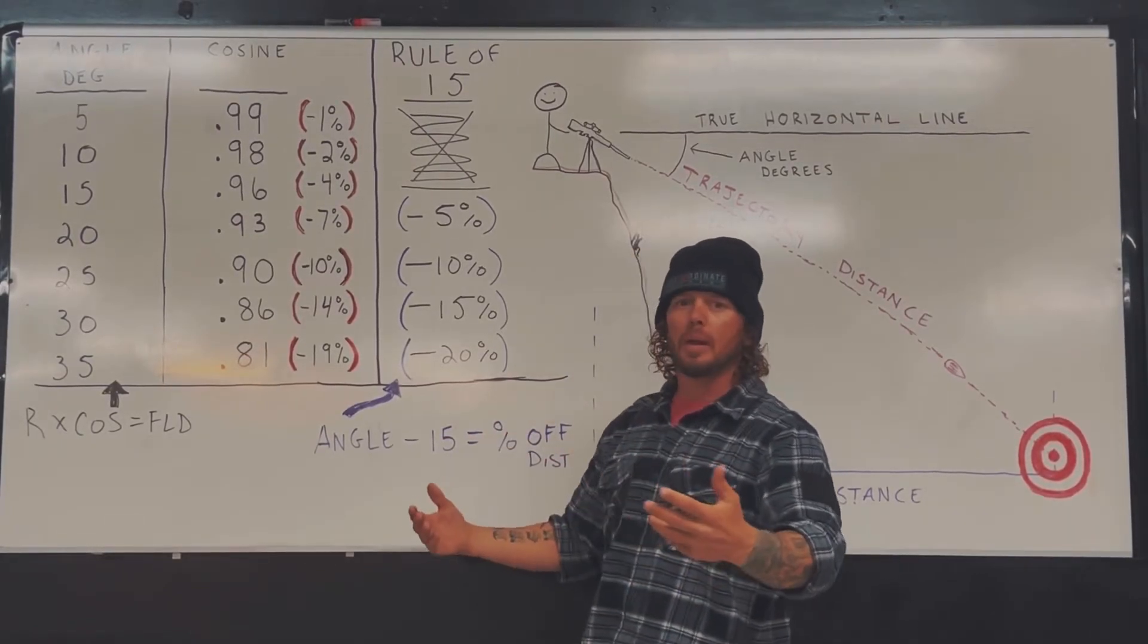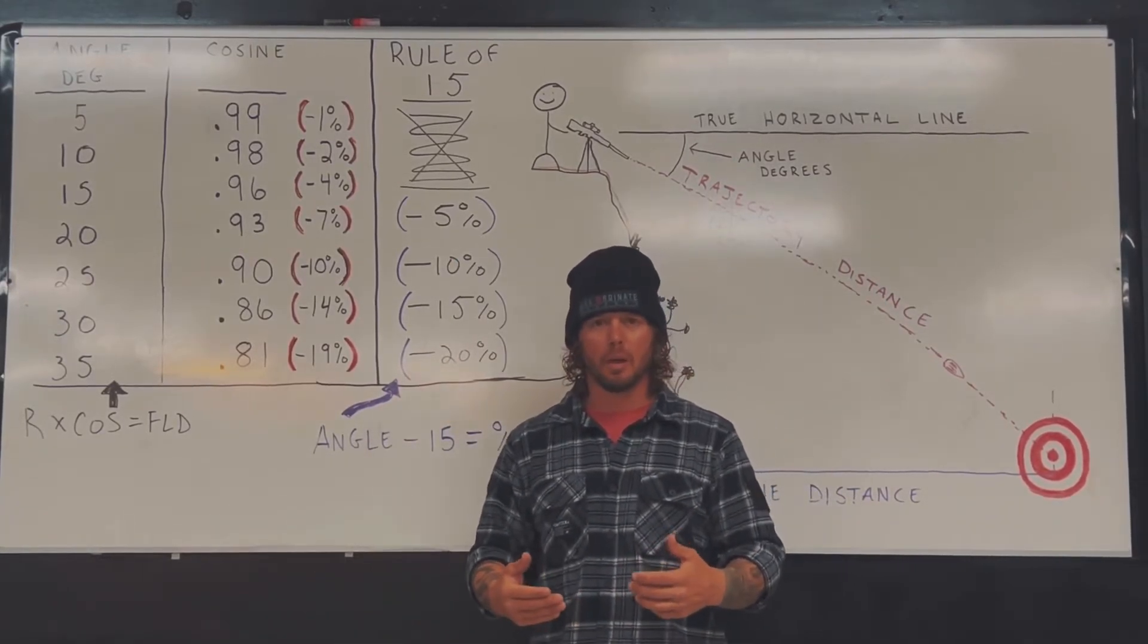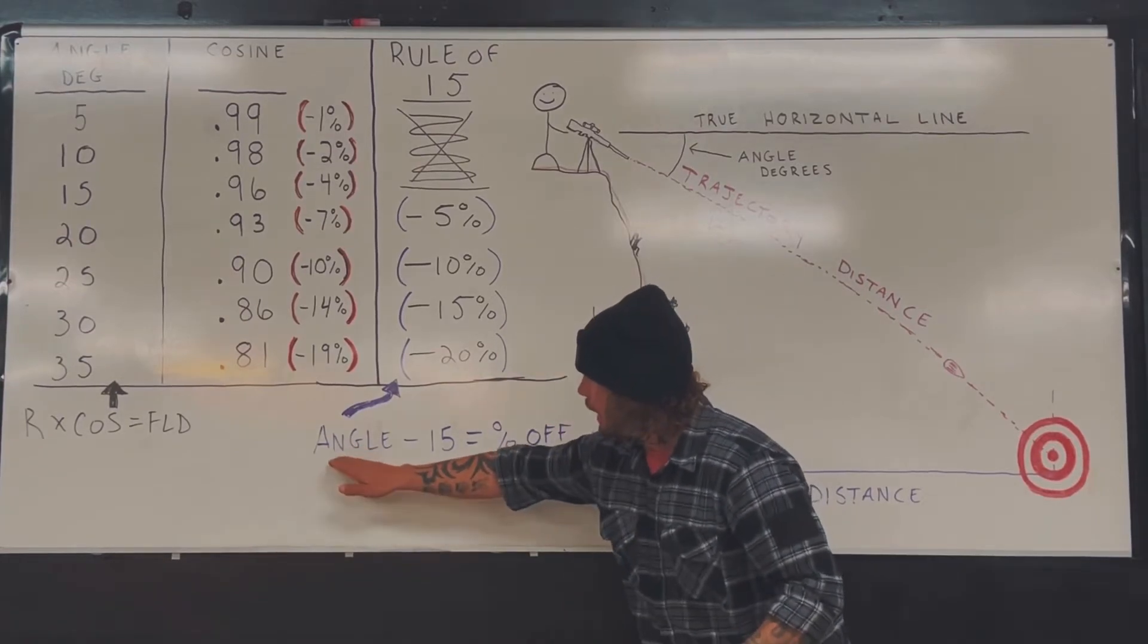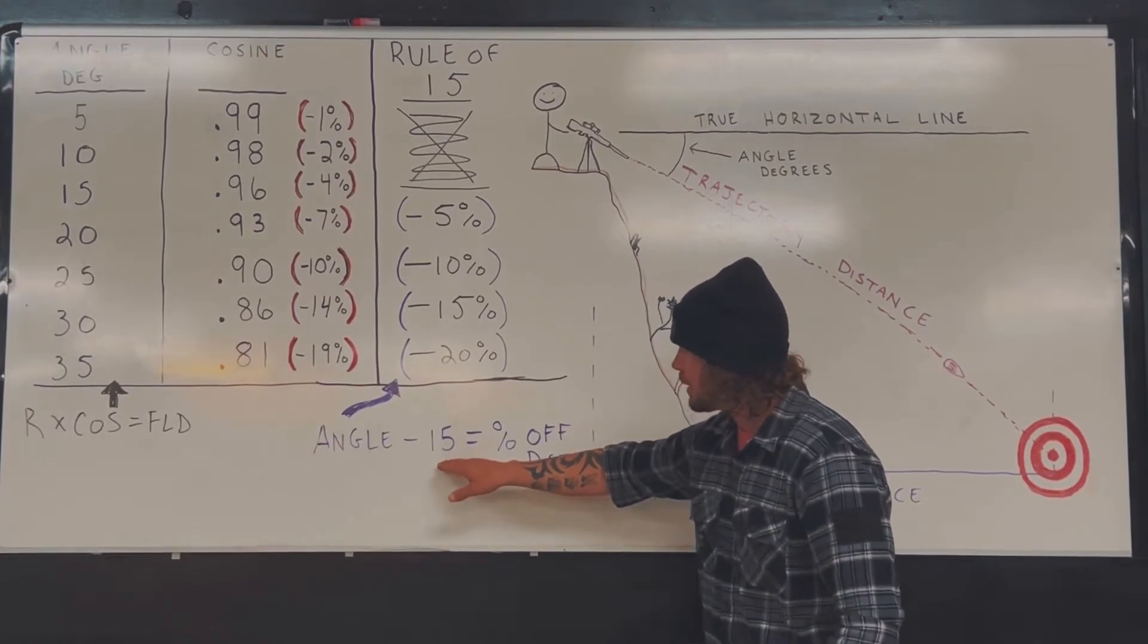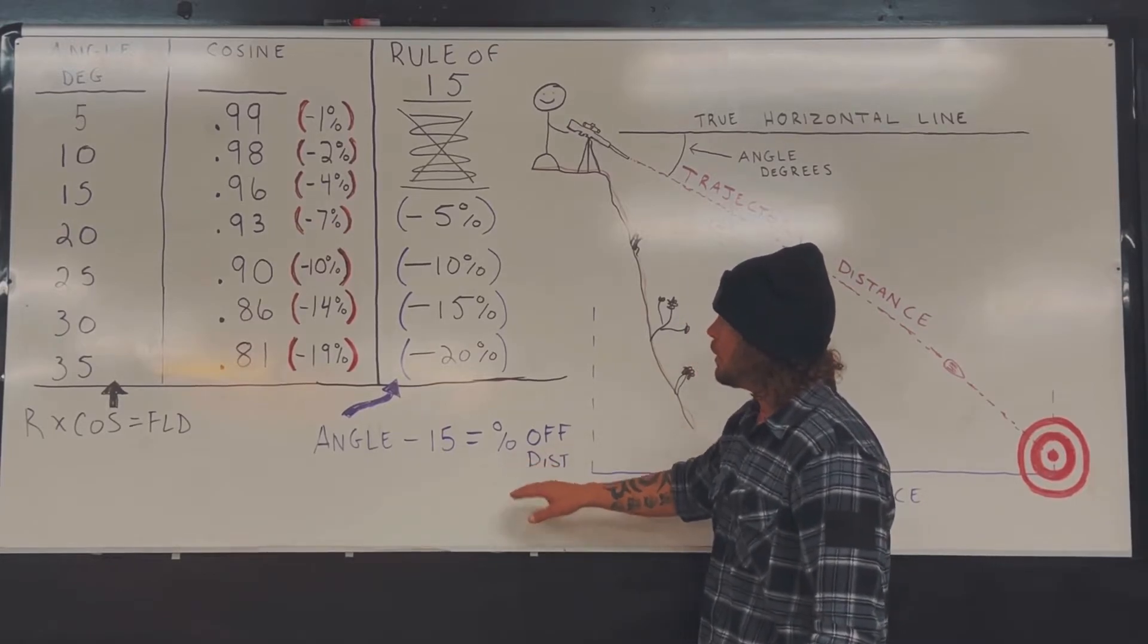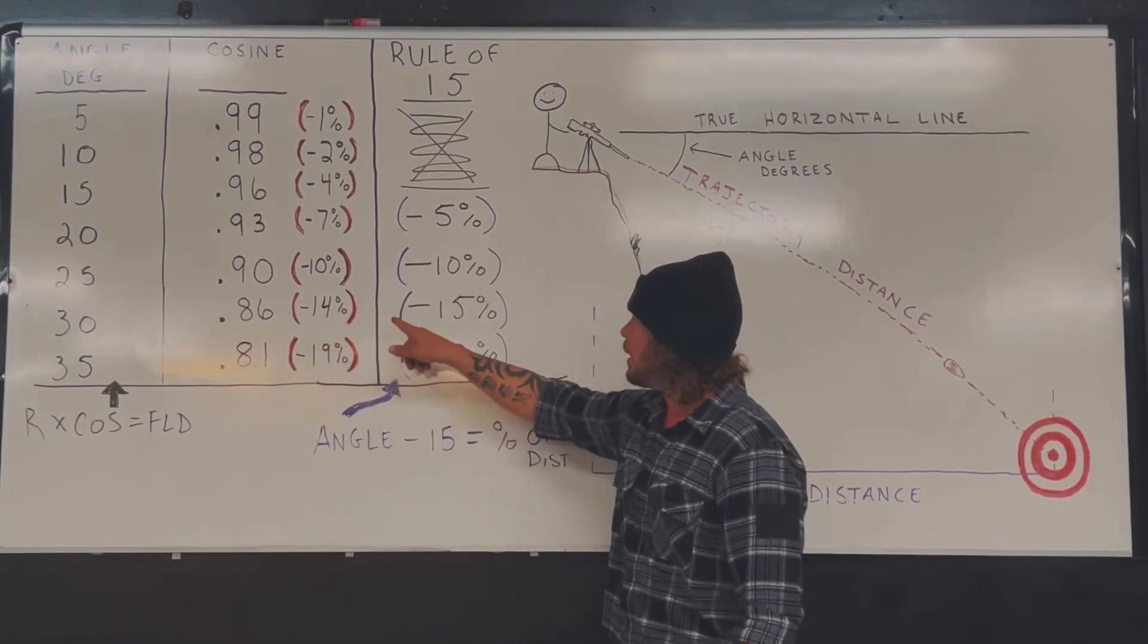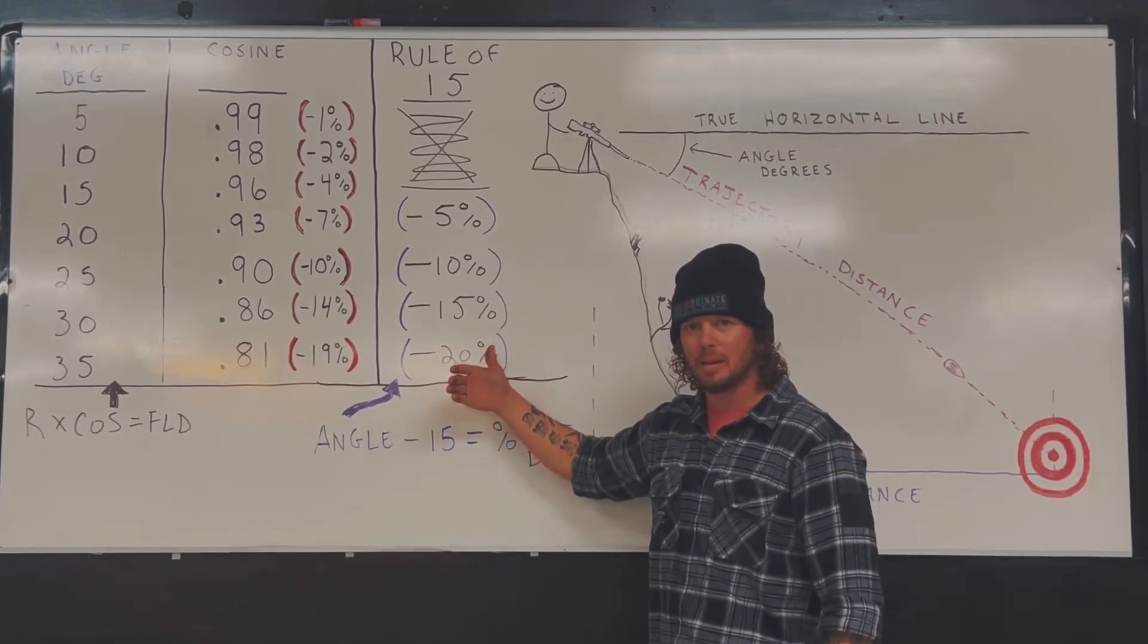Your phone can now act as point down at the target. What does your phone say that angle is? It says 20 degrees. Well, we call it the rule of 15 because we developed this a couple years ago, where all you need to do is subtract 15 from the angle. So here we go. Angle to the target, let's say 30 degrees, minus 15. 30 minus 15 is 15%. So look at 30 - look at the cosine, it's actually 14%. We are going 15% to make the math easy. And that's it.